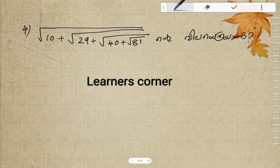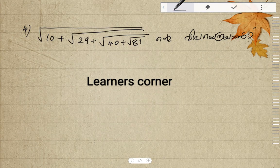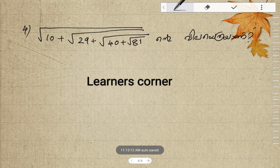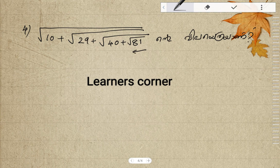Let's look at the next question. The question is: root of 10 plus root of 29 plus root of 40 plus root of 81. What is that? How will we solve this nested root problem?